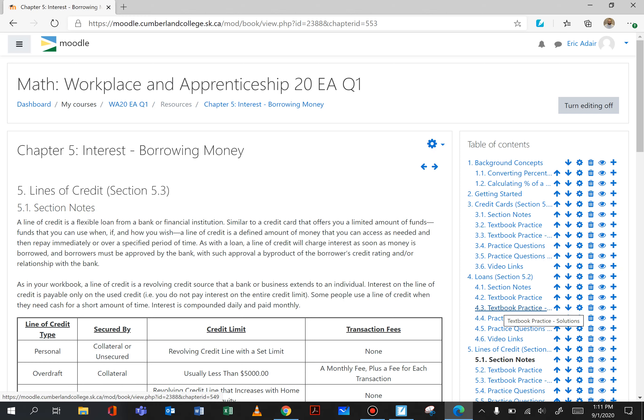This video is going to cover section 5.3 which looks at lines of credit. We're still borrowing money that we've talked about in the first two sections of this chapter. We're still going to be using the compound interest formula A equals P bracket 1 plus I bracket to the exponent N, but we're also going to be looking at transaction fees in this section as well.